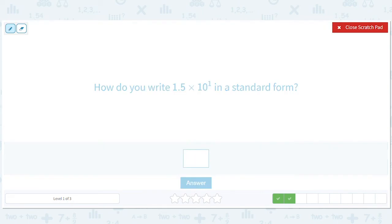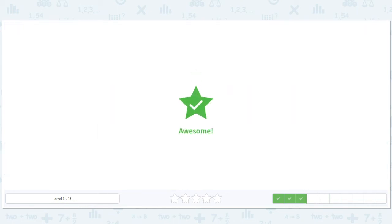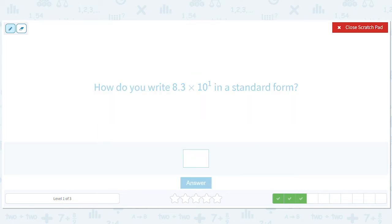1.5, move the decimal over 1. What do you get? 15. 8.3, move the decimal place over by 1. What do you get? 83.